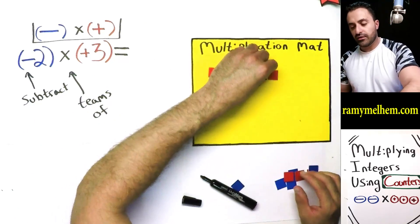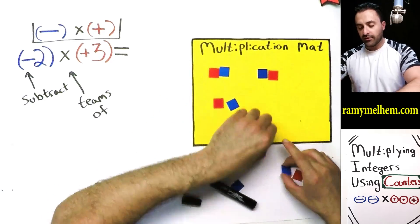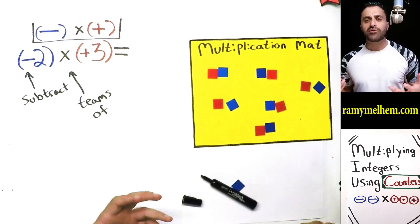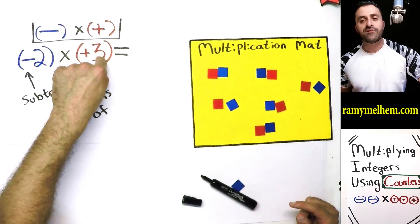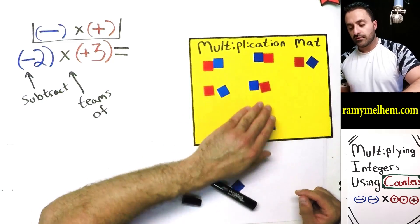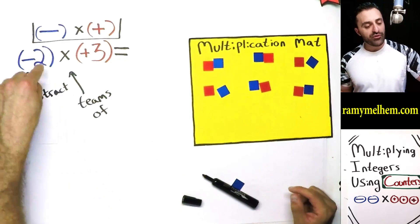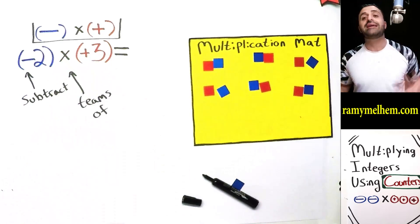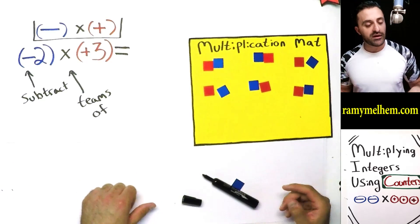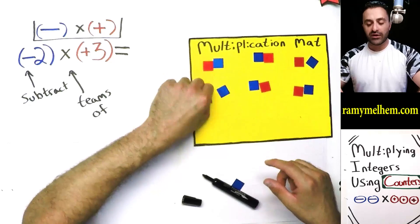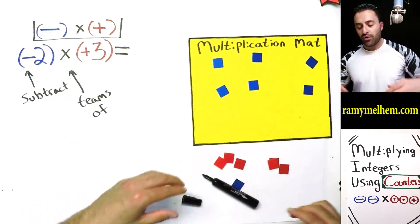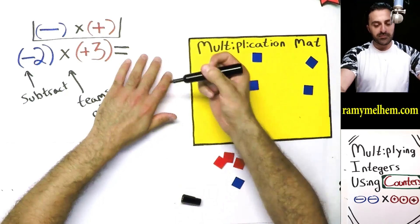So we're going to put a pair here and a pair here — red with blue, red with blue. How many players do I have to remove altogether? Two groups of three — that's six players, so I need six zeros. Now, can I remove two groups? I've got to subtract two groups of positive three. Here's one group of positive three — you're eliminated. Here's another group of positive three — disqualified. What's left over? Negative six.